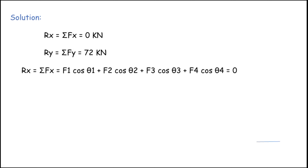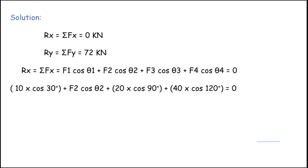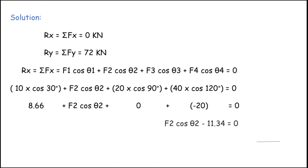Substituting known values: 10·cos 30° + F2·cos θ2 + 20·cos 90° + 40·cos 120° = 0. This gives: 8.66 + F2·cos θ2 + 0 + (−20) = 0, so 8.66 − 20 = −11.34.